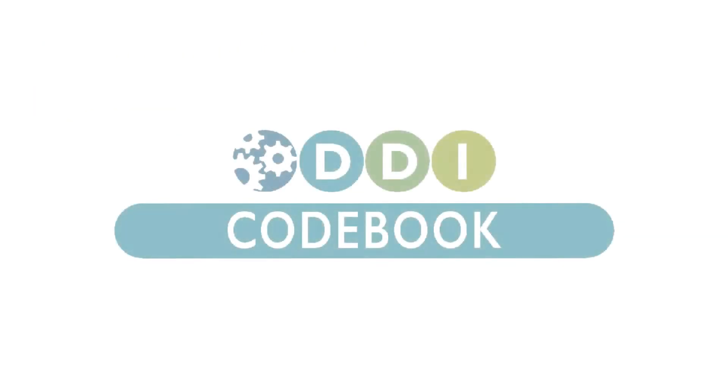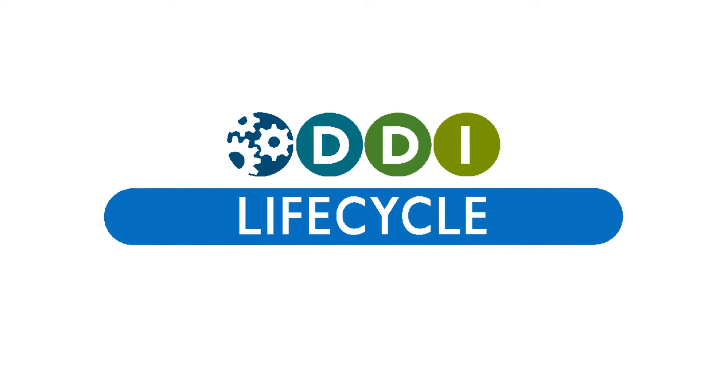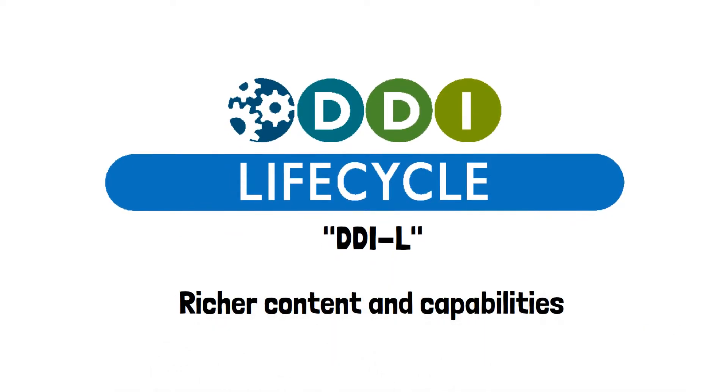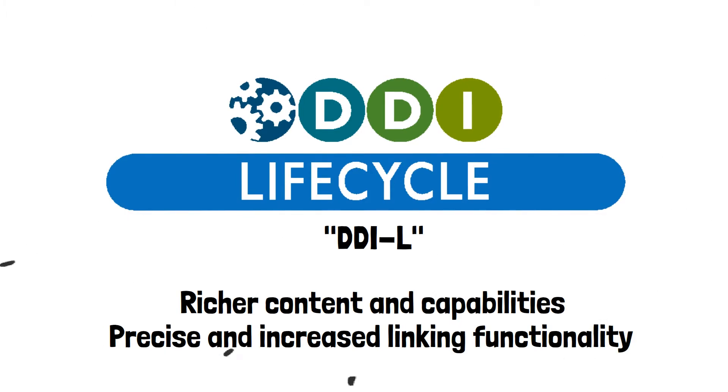A simple, limited version of DDI called DDI Codebook or DDIC was implemented in 2000 and was adopted by many international organizations. A much more robust version followed in 2008 called DDI Lifecycle or DDIL, which is able to handle all of what DDI Codebook offers, plus provide much richer content and capabilities with precise and increased linking functionality, particularly useful for waves of studies or for cross studies.